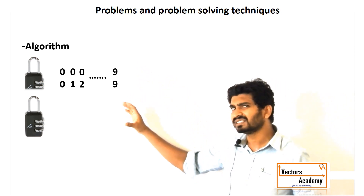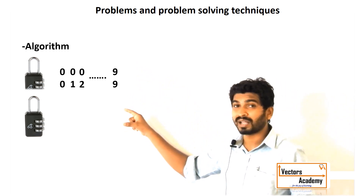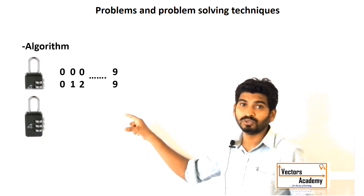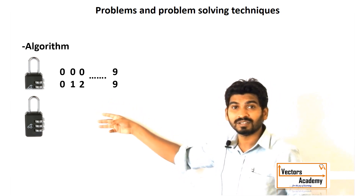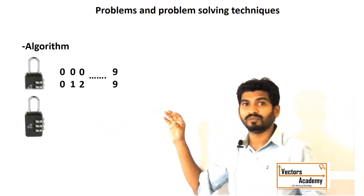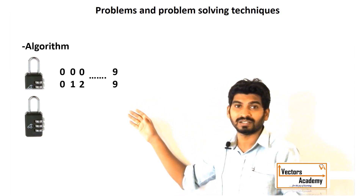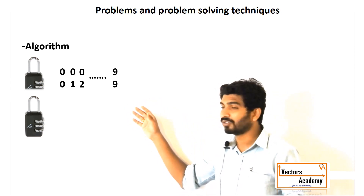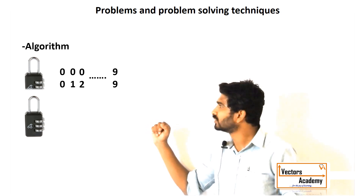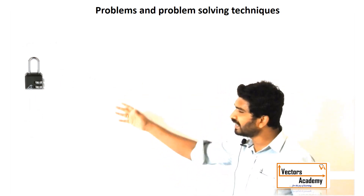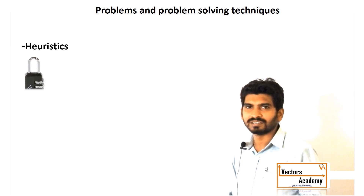The algorithm technique does guarantee the answer perfectly, but it can sometimes take a huge amount of time. For example, if we have a three-ring number lock, we would need to try up to a thousand combinations to find the correct one.